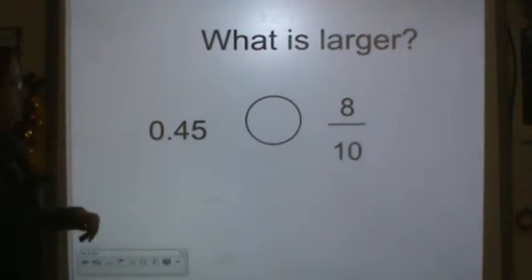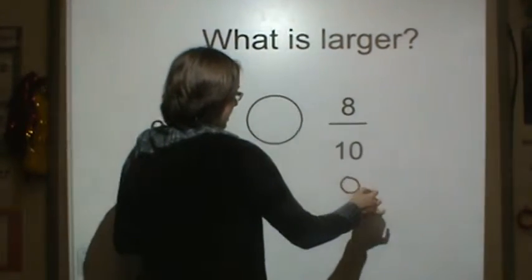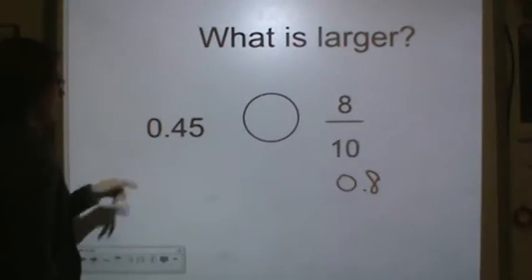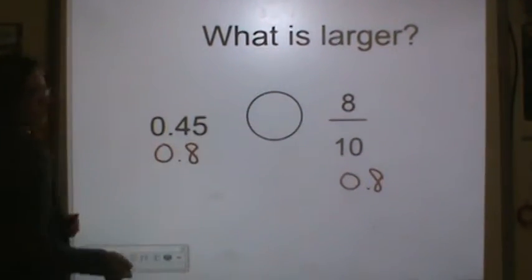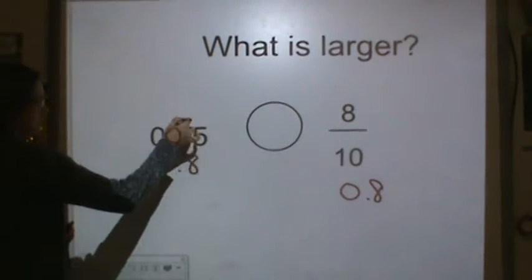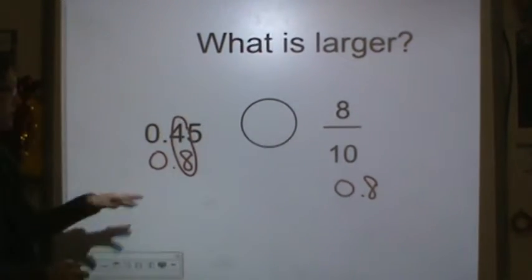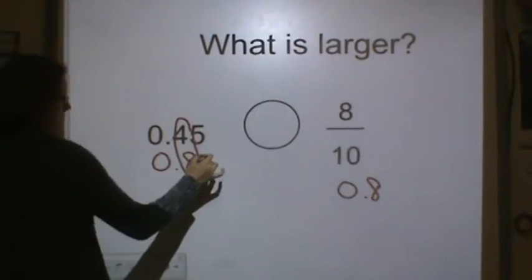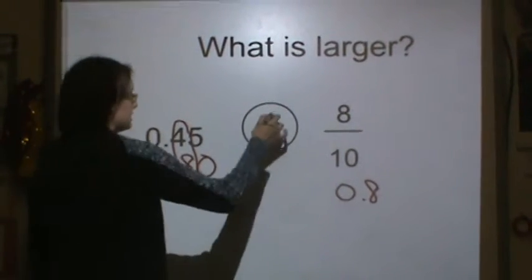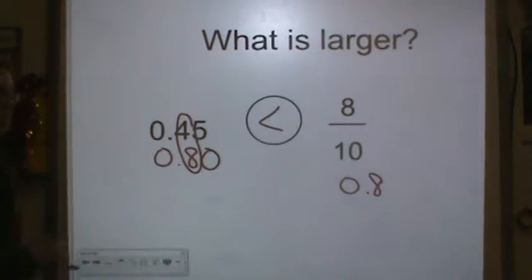Next, 45 hundredths. I'm going to make 8 tenths into a decimal. Now let's look at this. If I were to compare these, which one's bigger? Well, I know that tenths are bigger than hundredths. So 8 tenths or 80 hundredths is bigger than 45 hundredths.